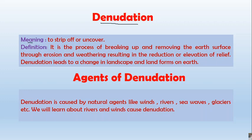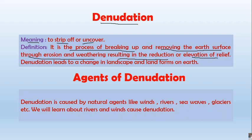What is the meaning of the word denudation? The meaning of the word denudation is to strip off or uncover — specifically, the earth's surface. We define denudation as the process of breaking up and removing the earth's surface through erosion and weathering, resulting in reduction or elevation of relief.